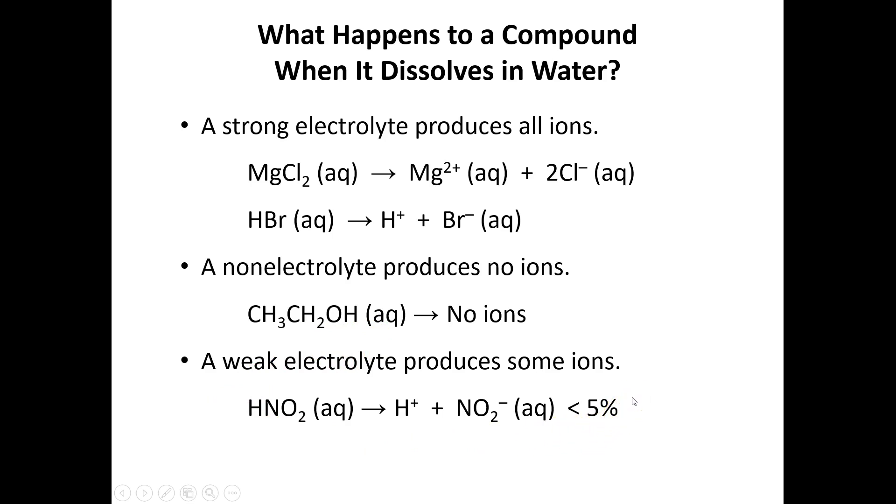Well, because it is only ionizing a little bit, almost always less than five percent and certainly less than 10 percent, we are always going to show a weak electrolyte as being unionized in an ionic equation. That is, we're going to show it as an intact molecule.